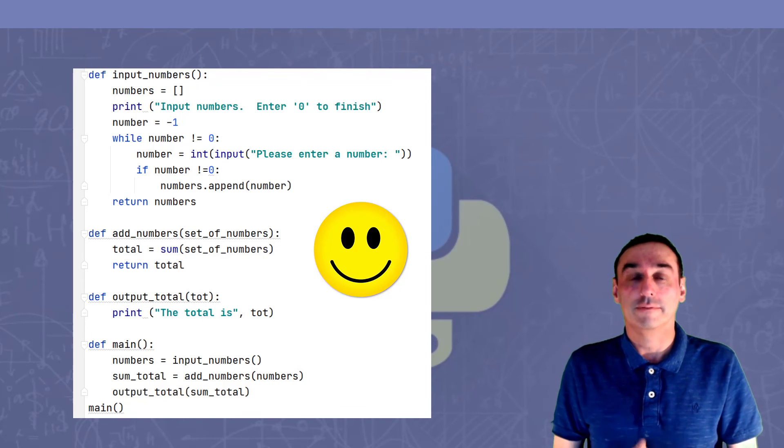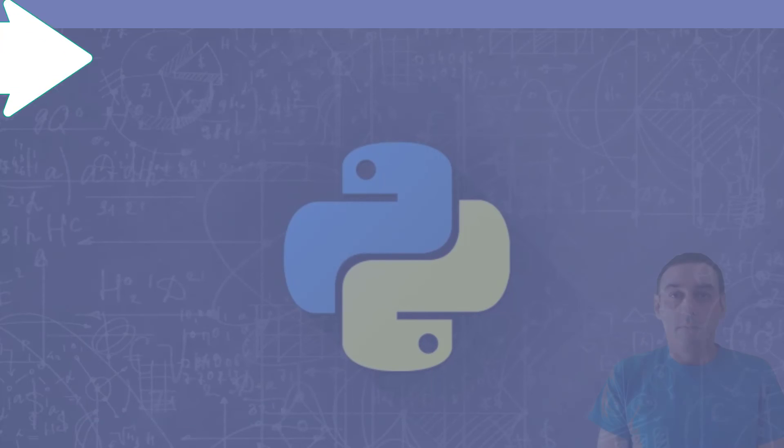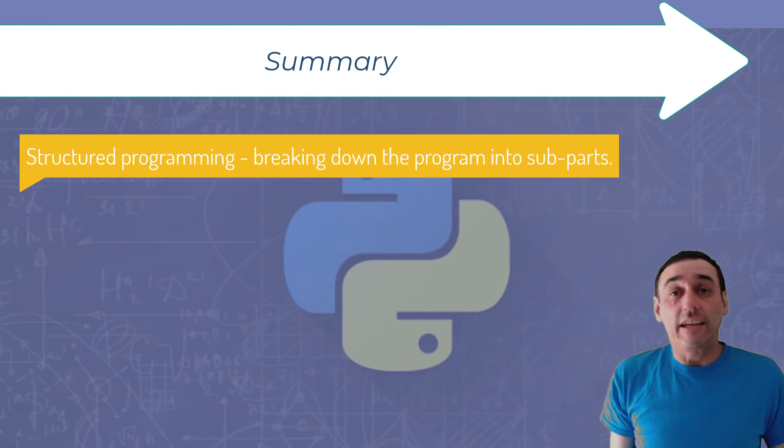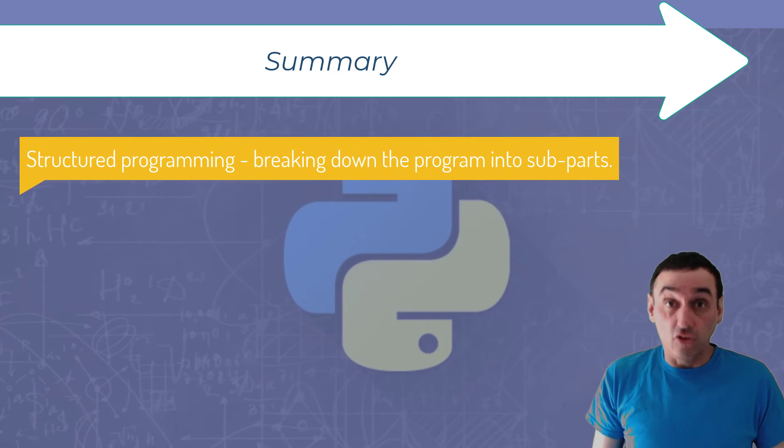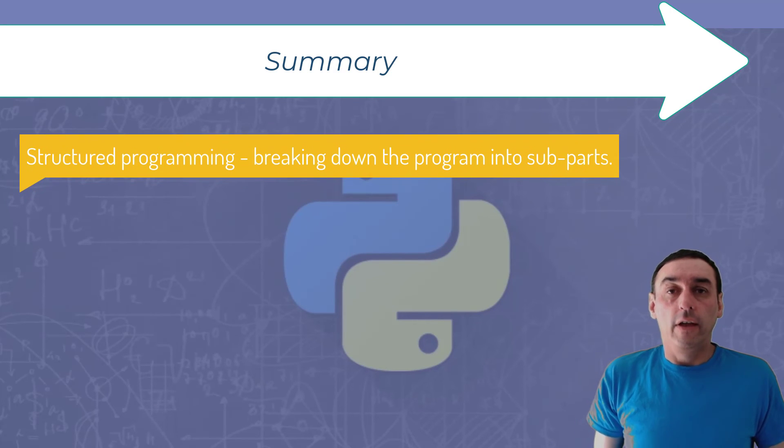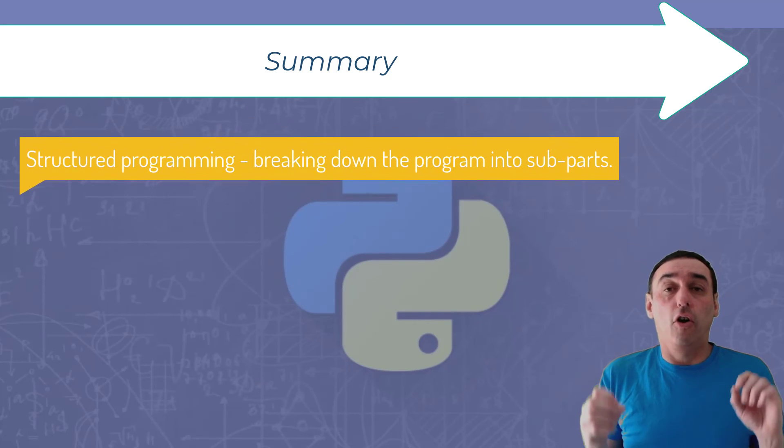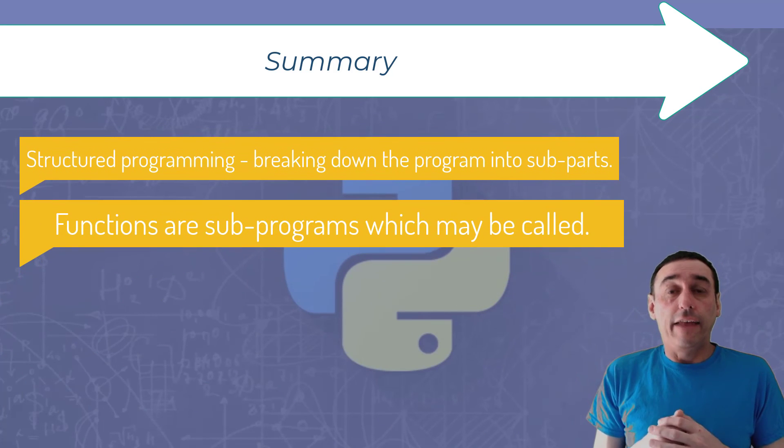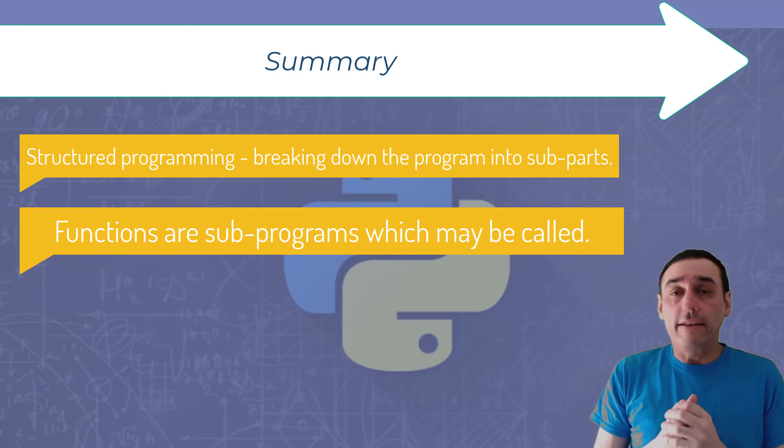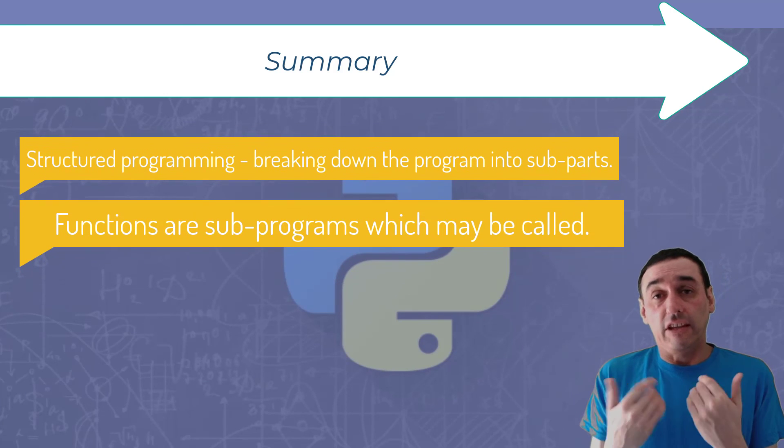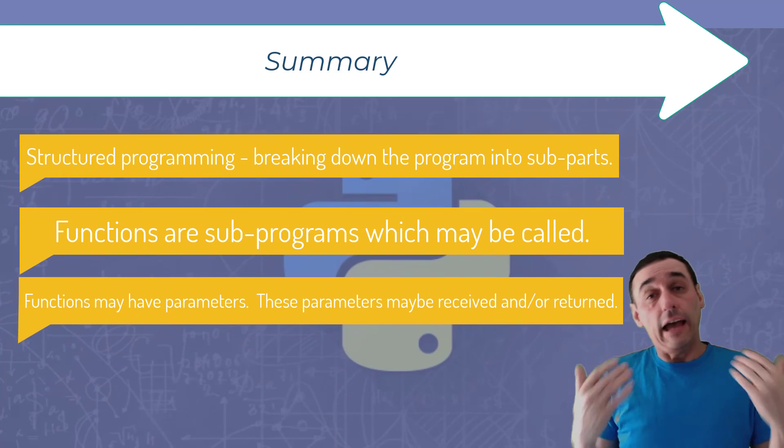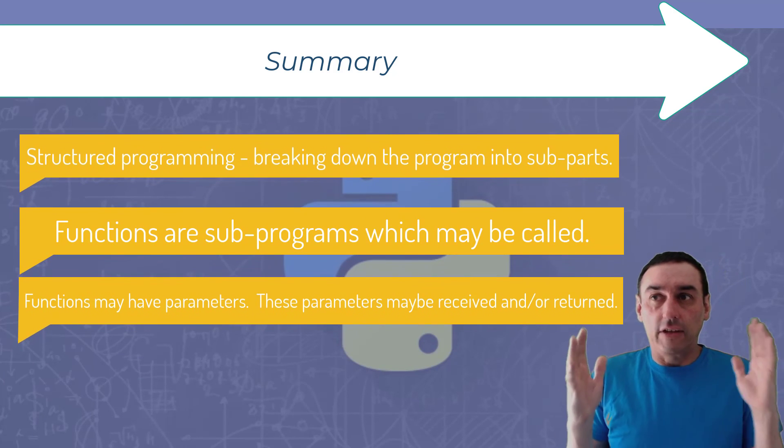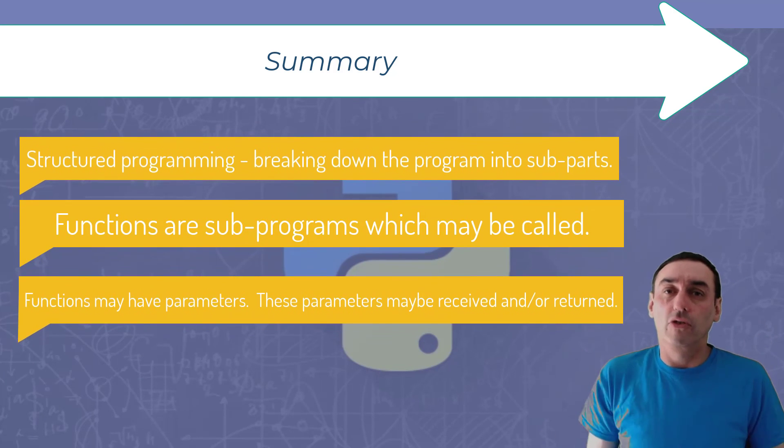In summary, structured programming is taking a problem and breaking it down into sub parts. In Python, these sub parts are replaced using functions, and functions may or may not have parameters. These parameters may be received and/or returned. So hopefully that will give you a basic idea of how to structure your next program.